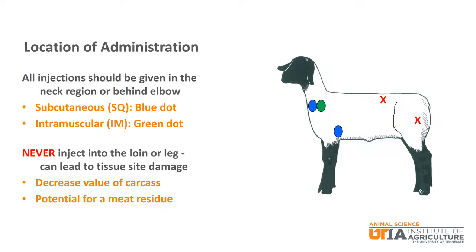All injections, regardless of type, should be given in the neck region or behind the elbow. Subcutaneous injections should be given in the blue dots, while intramuscular injections should only be given in the green dot. Administering injections in other areas of the animal can lead to tissue site damage, which is cut away during the harvesting process and decreases the value of the carcass and increases the potential for a drug residue in the meat. You should never give an injection in the loin or the leg.